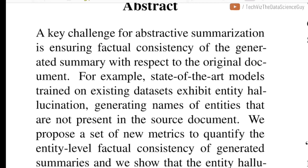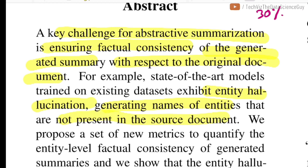A key challenge for abstractive text summarization is ensuring factual consistency of the generated summary with respect to the original document. Current state-of-the-art models like BART, T5, and Pegasus — even though they have very high ROUGE scores — still exhibit entity hallucinations. One recent study showed this happening almost 30% of the time, wherein entities such as names and locations that the model generates as part of the summary were actually not present in the source document, which is a form of fact fabrication.